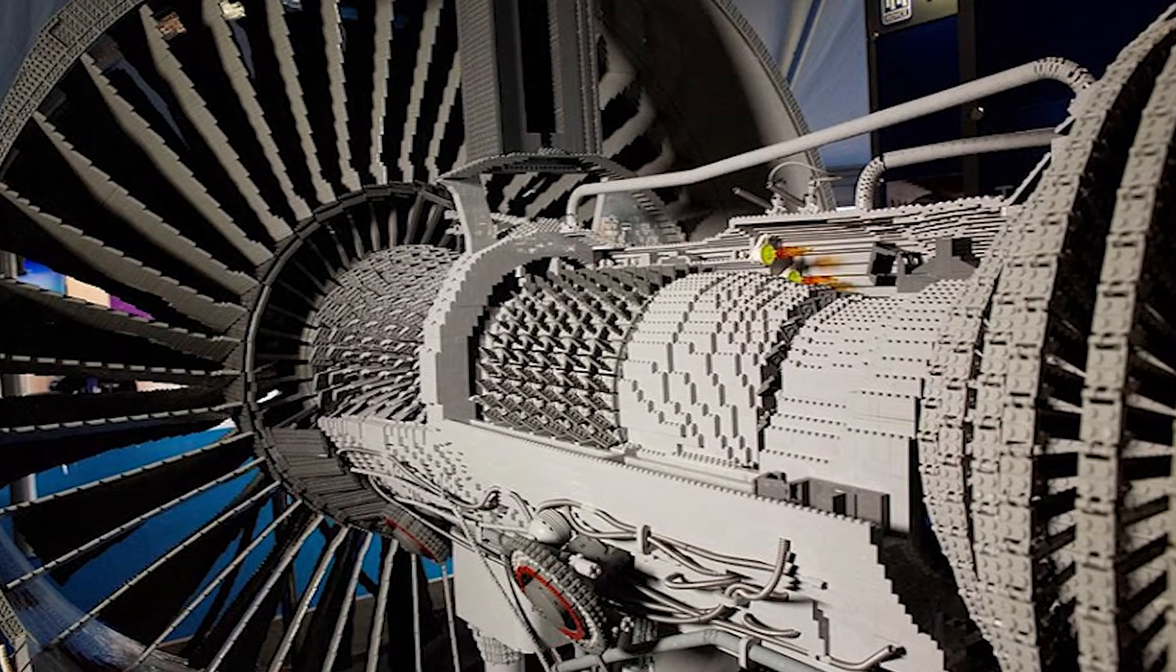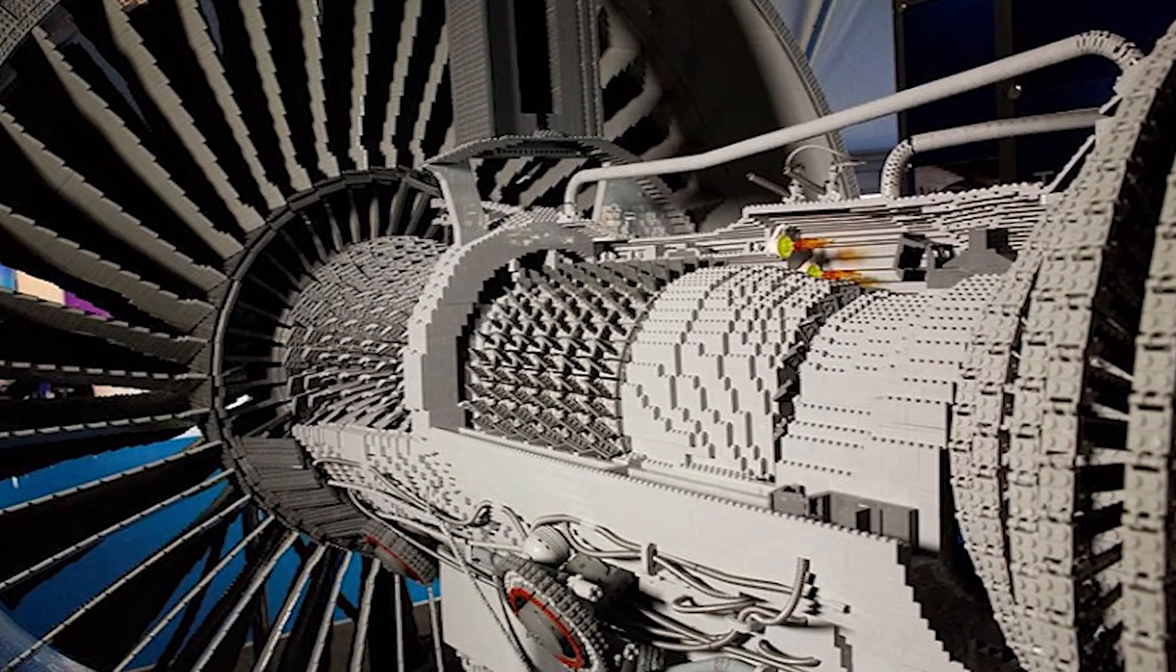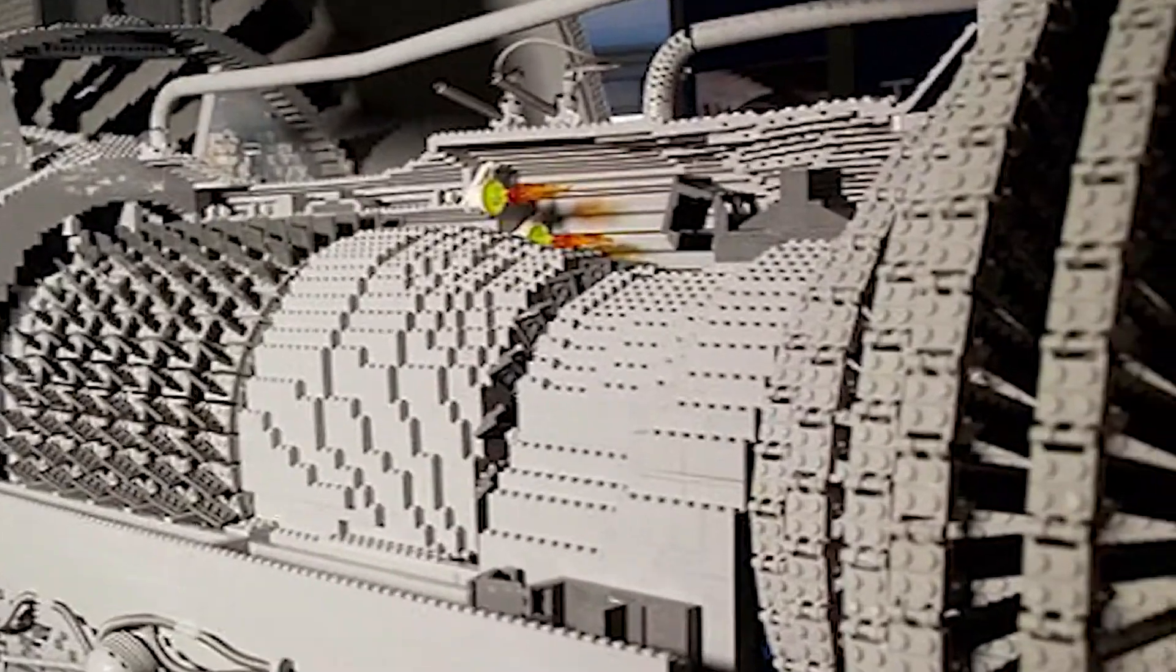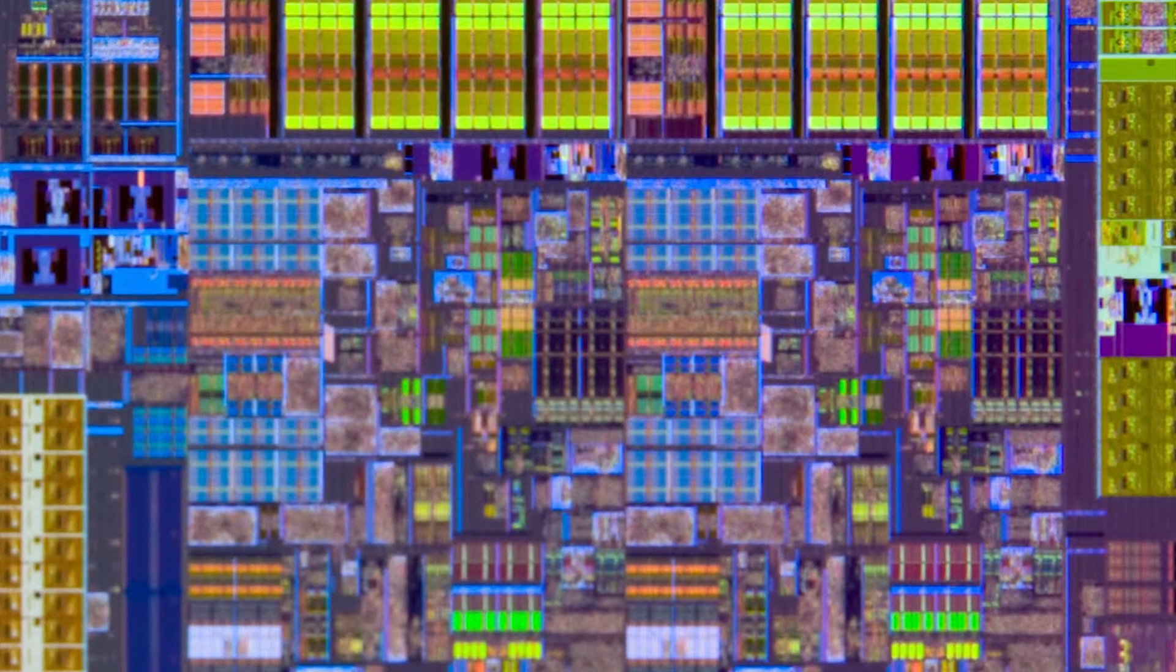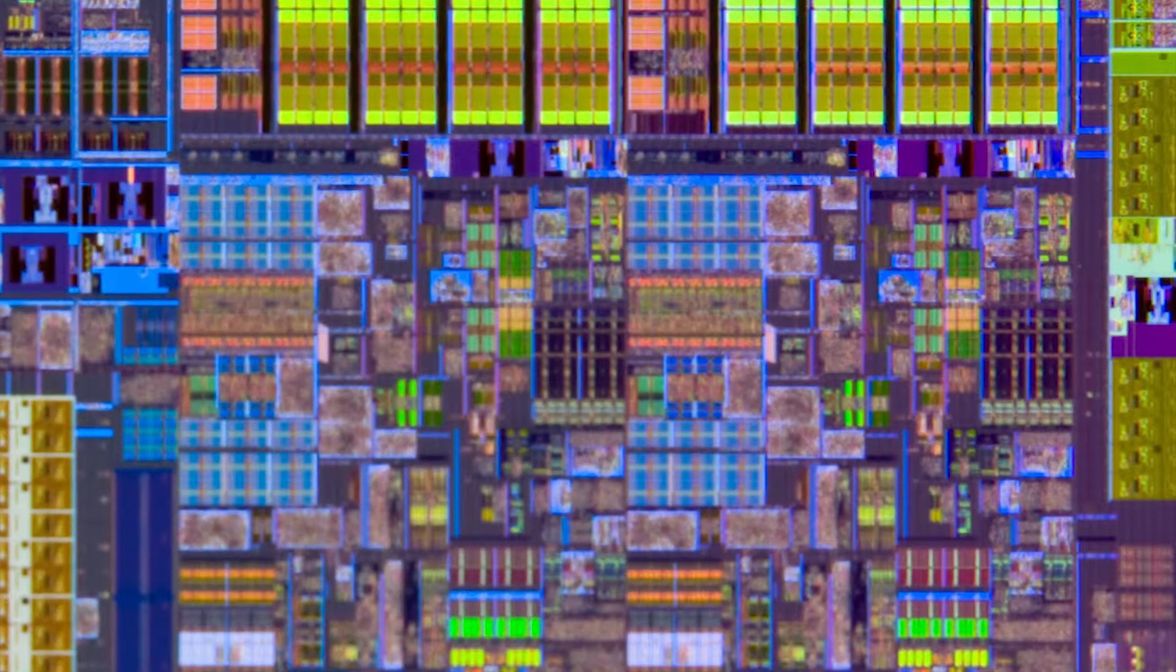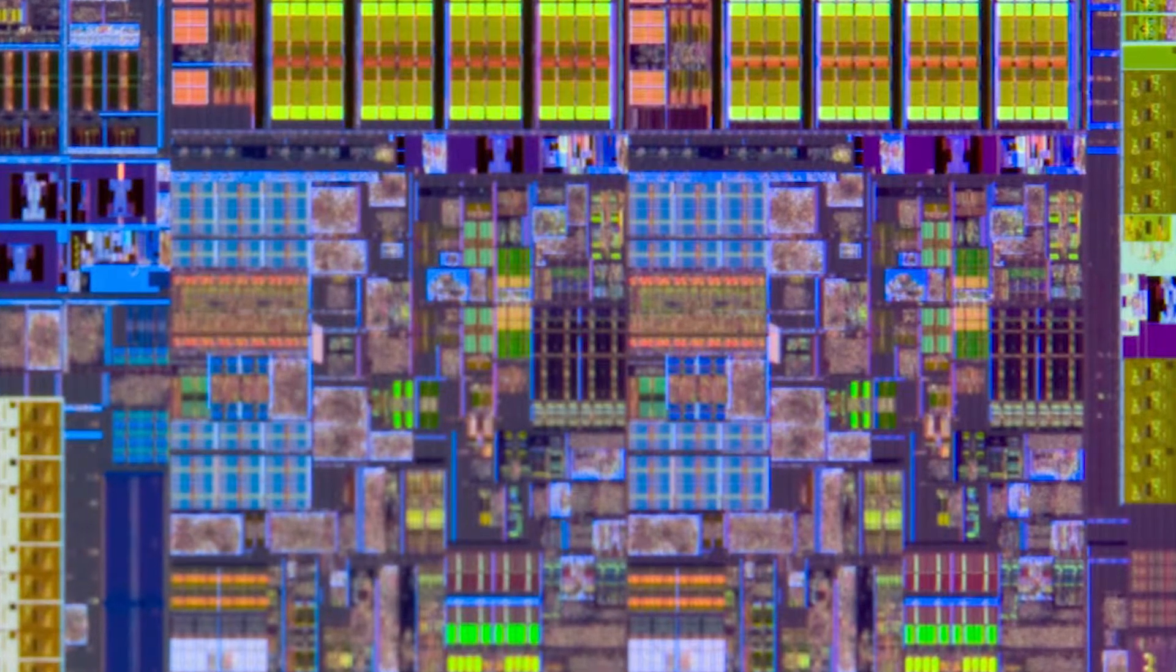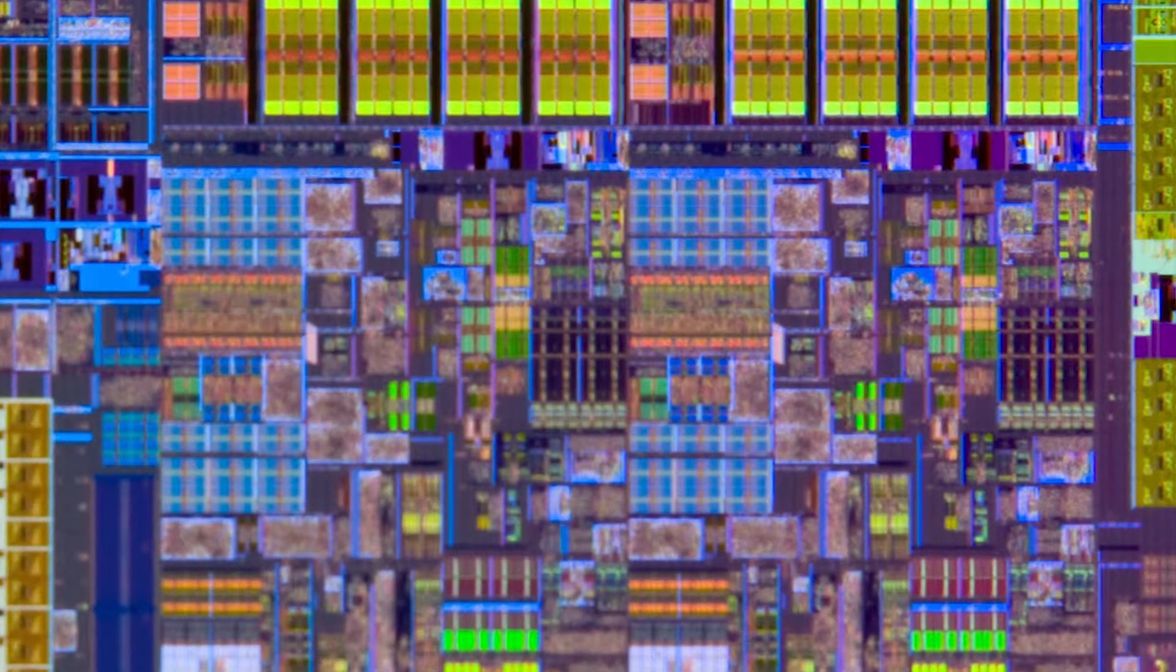Most complex things can be broken down into simpler component parts. This Rolls Royce Jet Turbine is built of Lego bricks and any microprocessor is just an array of transistors. Over 1 billion transistors in the largest microprocessor, but smaller more manageable components nevertheless.